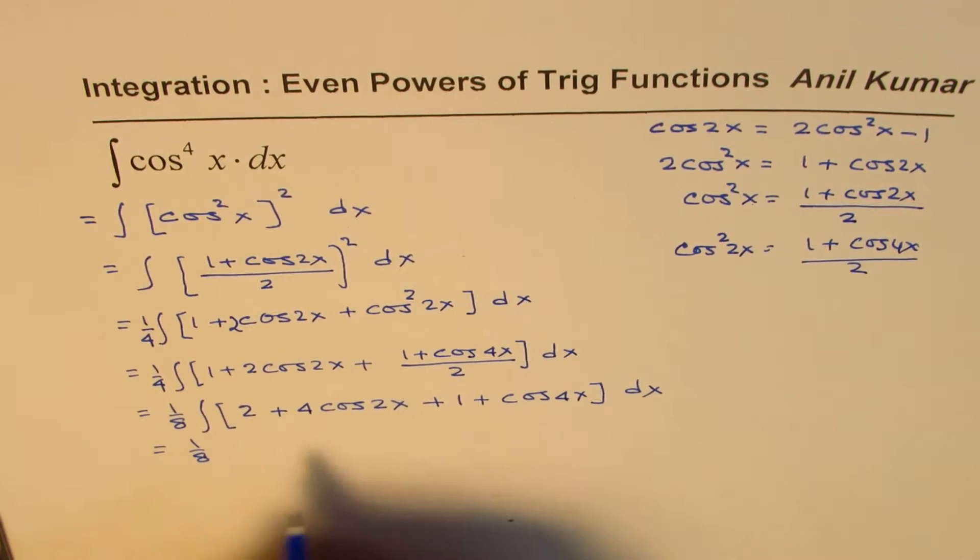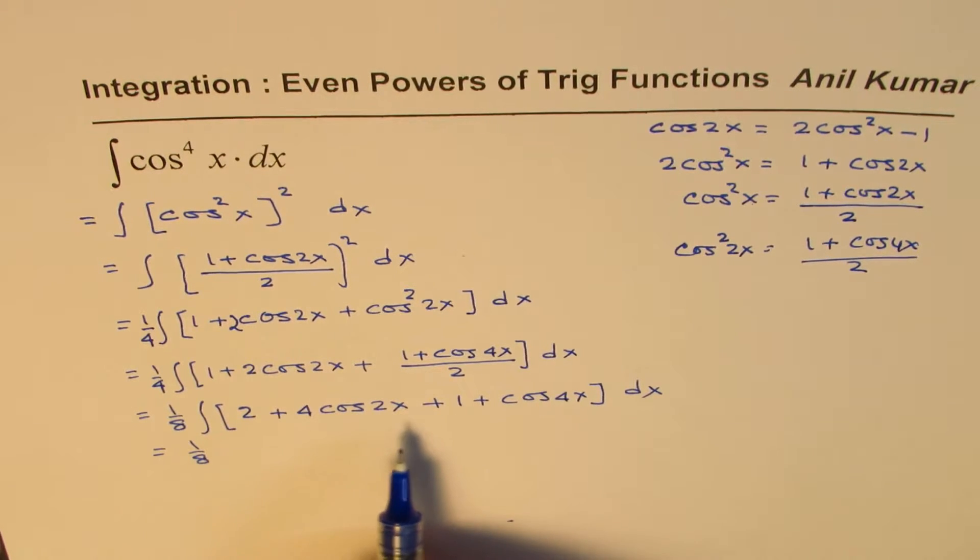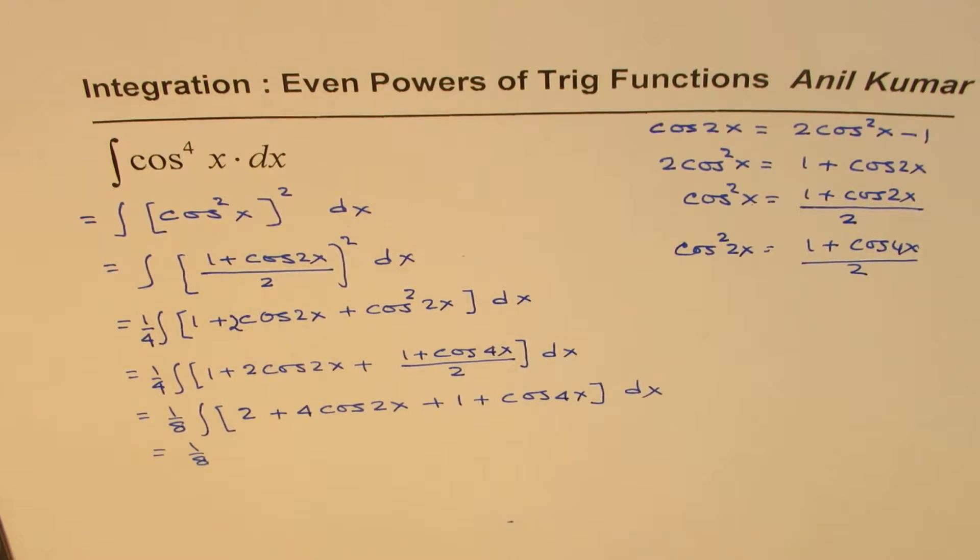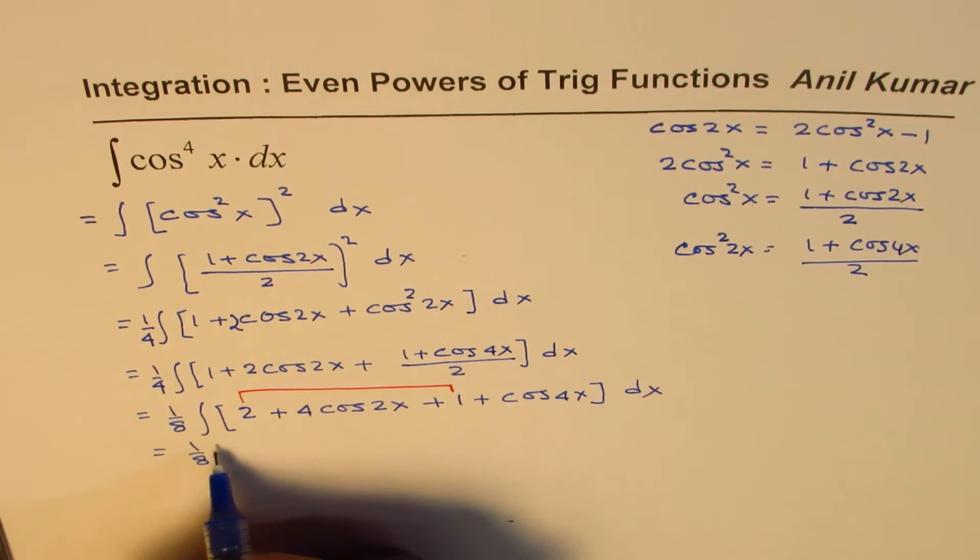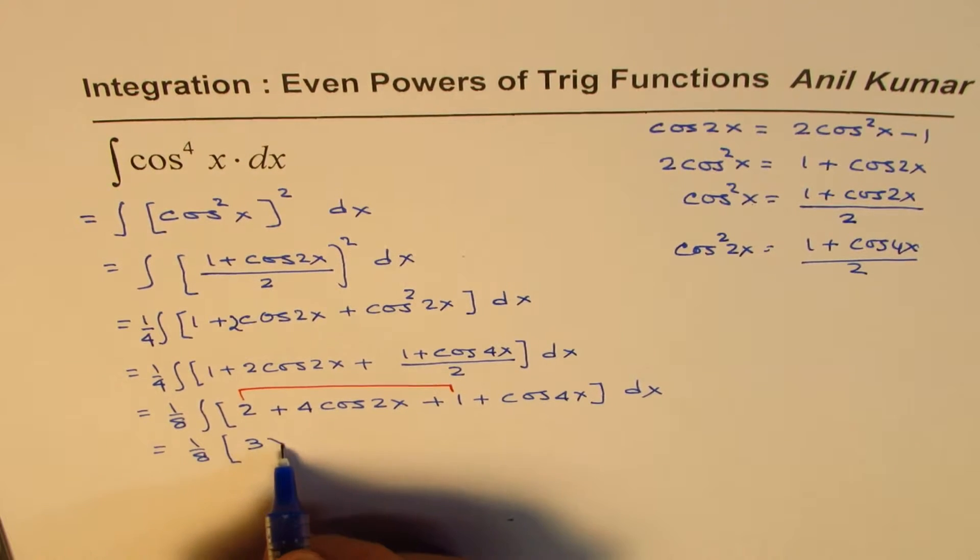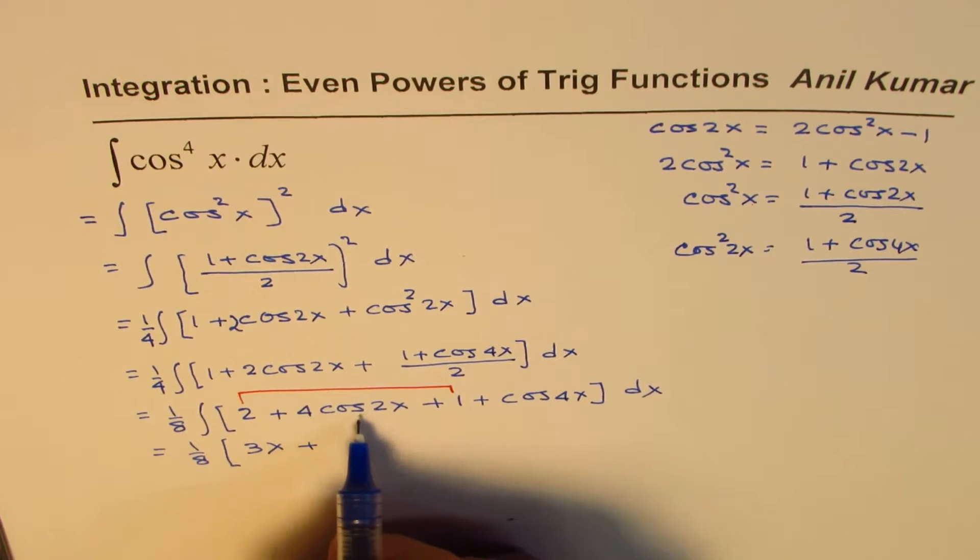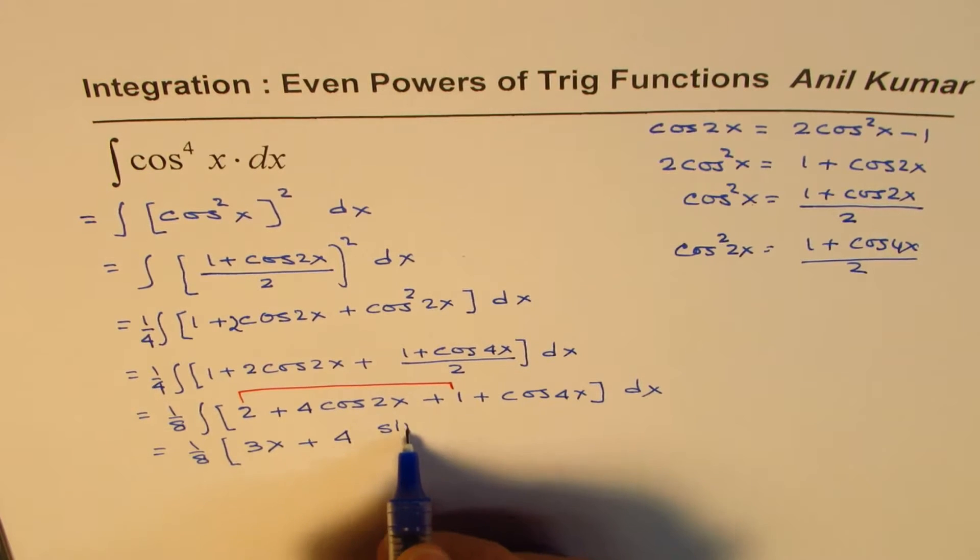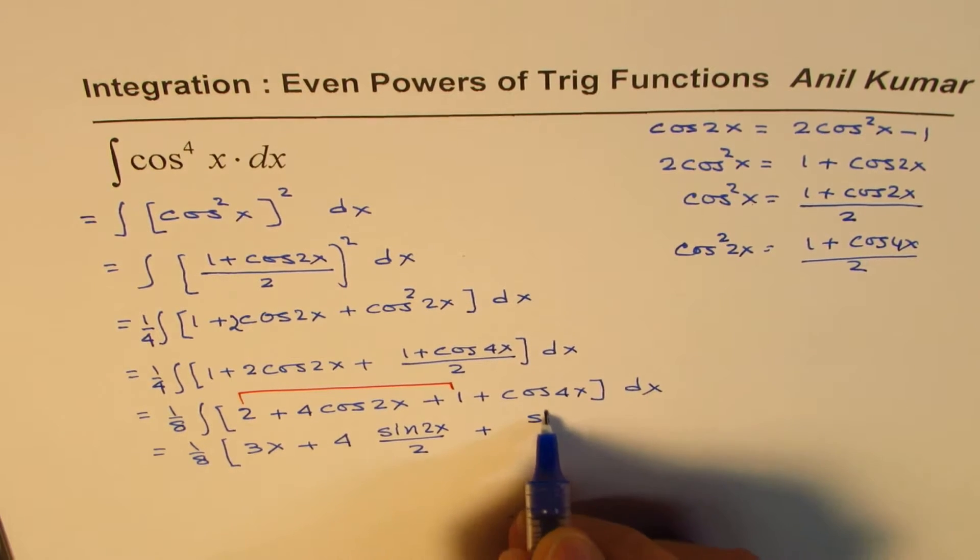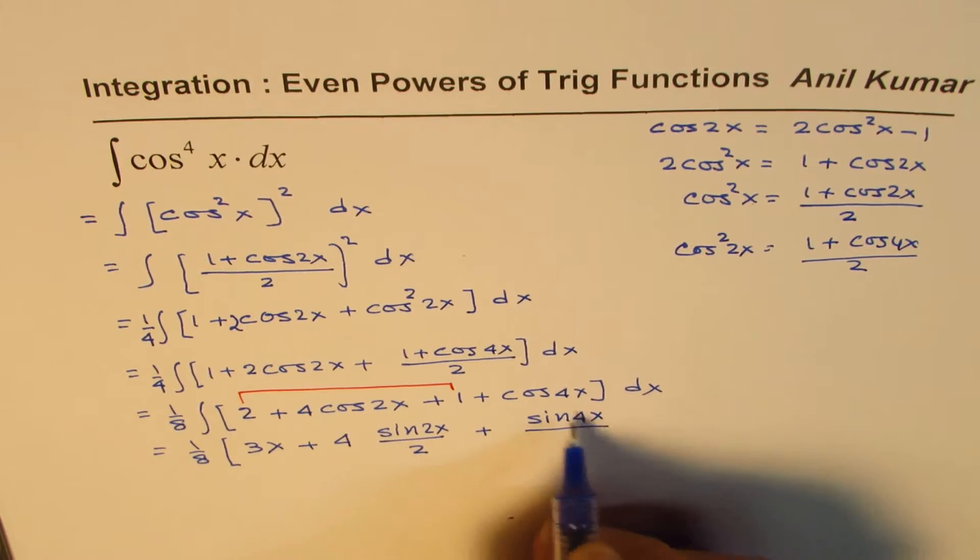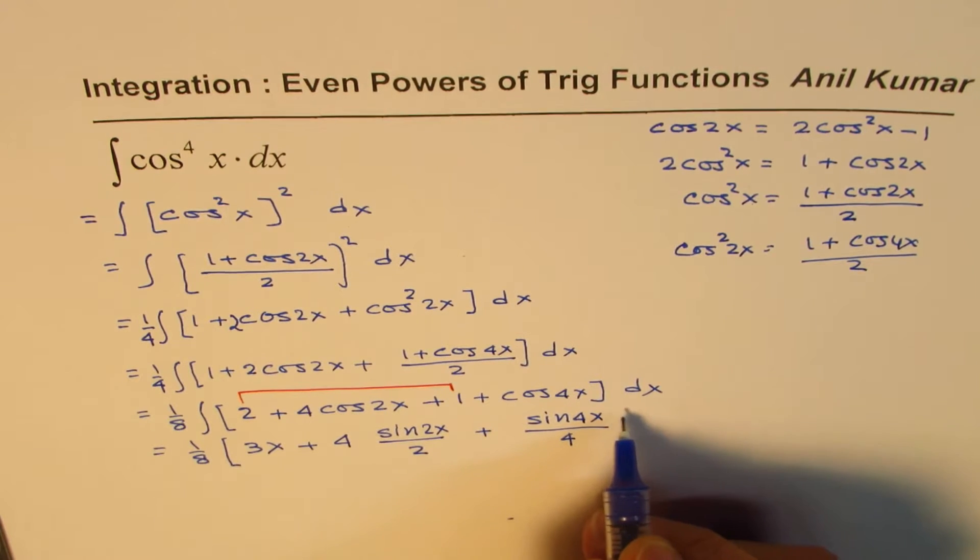We have 1/8 ∫(3 + 4cos(2x) + cos(4x)) dx. Now we can integrate: the integral of 3 is 3x. The integral of 4cos(2x) is 4sin(2x)/2, which is 2sin(2x). For cos(4x), it's sin(4x)/4.